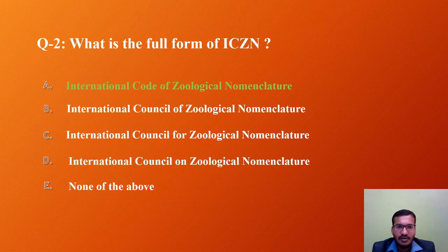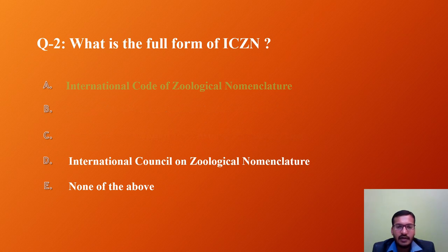Question 2: What is the full form of ICZN? Option A: International Code of Geological Nomenclature. Option B: International Council of Geological Nomenclature. Option C: International Council for Geological Nomenclature. Option D: International Council on Geological Nomenclature. Option E: None of the above. The correct full form is International Code of Geological Nomenclature. Another correct full form is International Commission on Geological Nomenclature, but that option is not given here. So the answer is A.